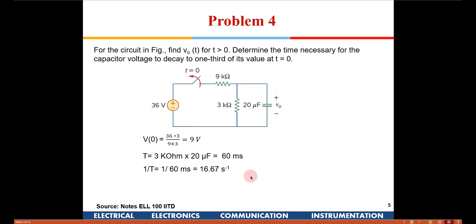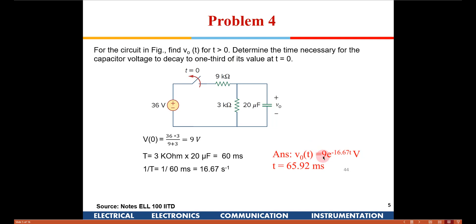So 1/tau equals 16.67 s⁻¹. We write the equation: V₀(t) = 9 e^(−16.67t) volts. To find the time for the capacitor voltage to decay to one third, we set V₀ = 3 volts: 3 = 9 e^(−16.67t). Taking the logarithm of this expression, we compute the value of t. Substituting V₀ = 3, we get the value of t.